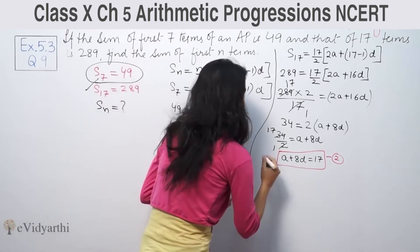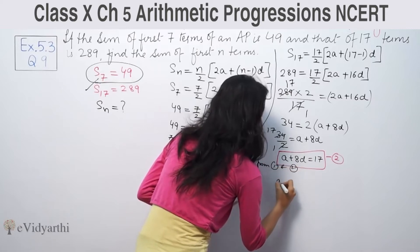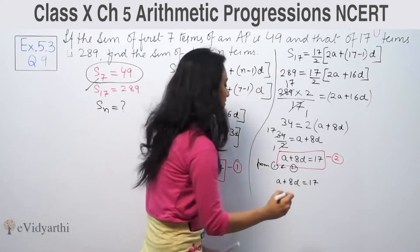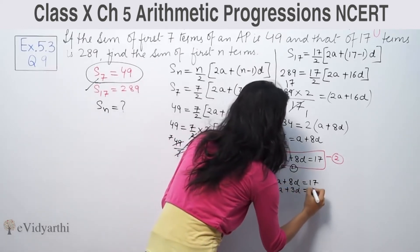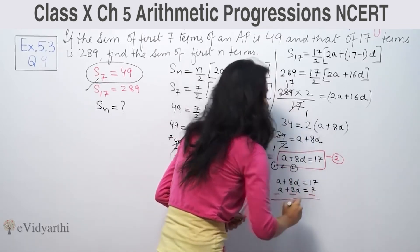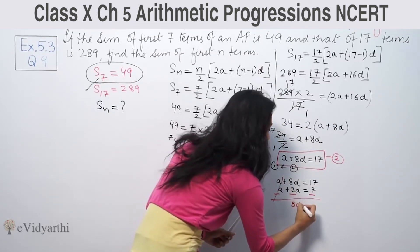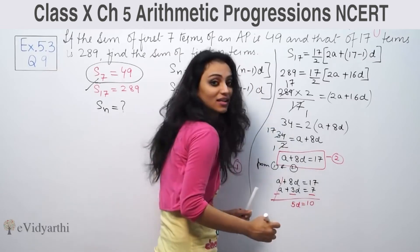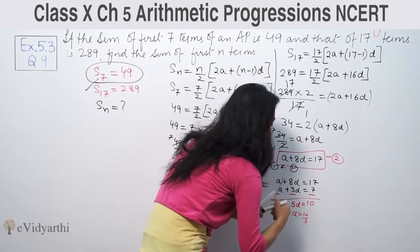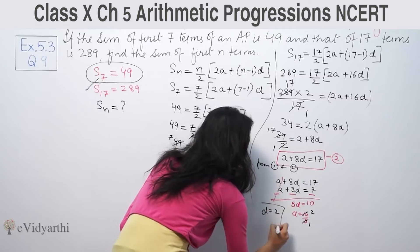From first and second: a + 8d = 17 and a + 3d = 7. Subtracting these, we get 5d = 10, so d = 10/5 = 2. The common difference is 2.